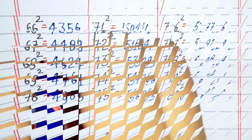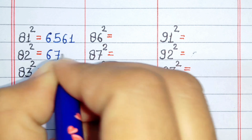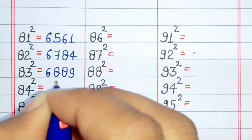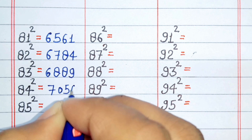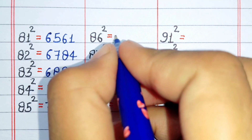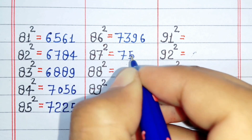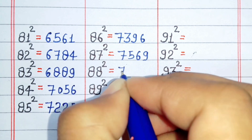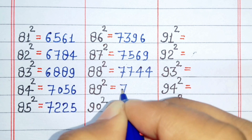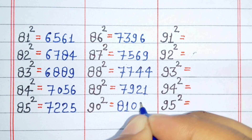Square of 81 is 6561. Square of 82 is 6784. Square of 83 is 6889. Square of 84 is 7056. Square of 85 is 7225. Square of 87 is 7569. Square of 88 is 7744. Square of 89 is 7921.